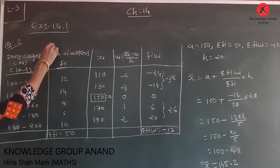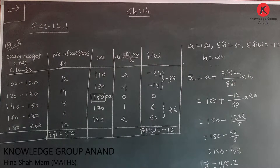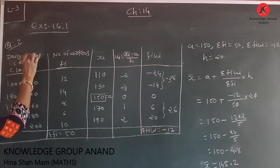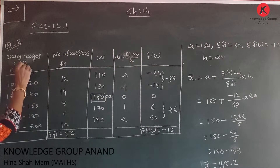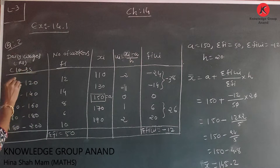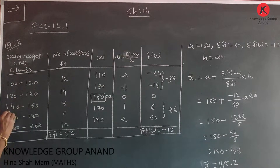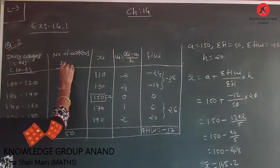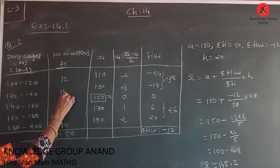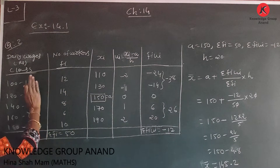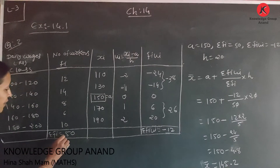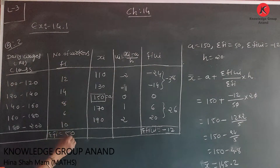Exercise 40.1, Question 1. The class intervals are 100-120, 120-140, 140-160, 160-180, 180-200. The number of workers (frequencies) given are 12, 14, 8, 6, 10. Both columns are given. Σfi = sum of frequencies = 50.